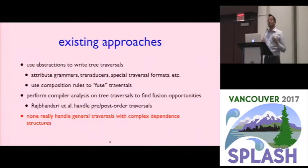So tree traversals are very common. And as you might expect, lots of people have looked at how to optimize sequences of tree traversals. For example, there are people that have looked at using various kinds of abstractions to write tree traversals. For example, attribute grammars that can be scheduled effectively and fused effectively. Or tree transducers or special frameworks for writing traversals in the first place. And they use various composition rules to fuse traversals together. More recently, some people have actually looked at doing compiler analysis, analyzing the behavior of imperative tree traversals, which is what we look at in this work, and figuring out what the dependencies are and how you might be able to fuse things together.